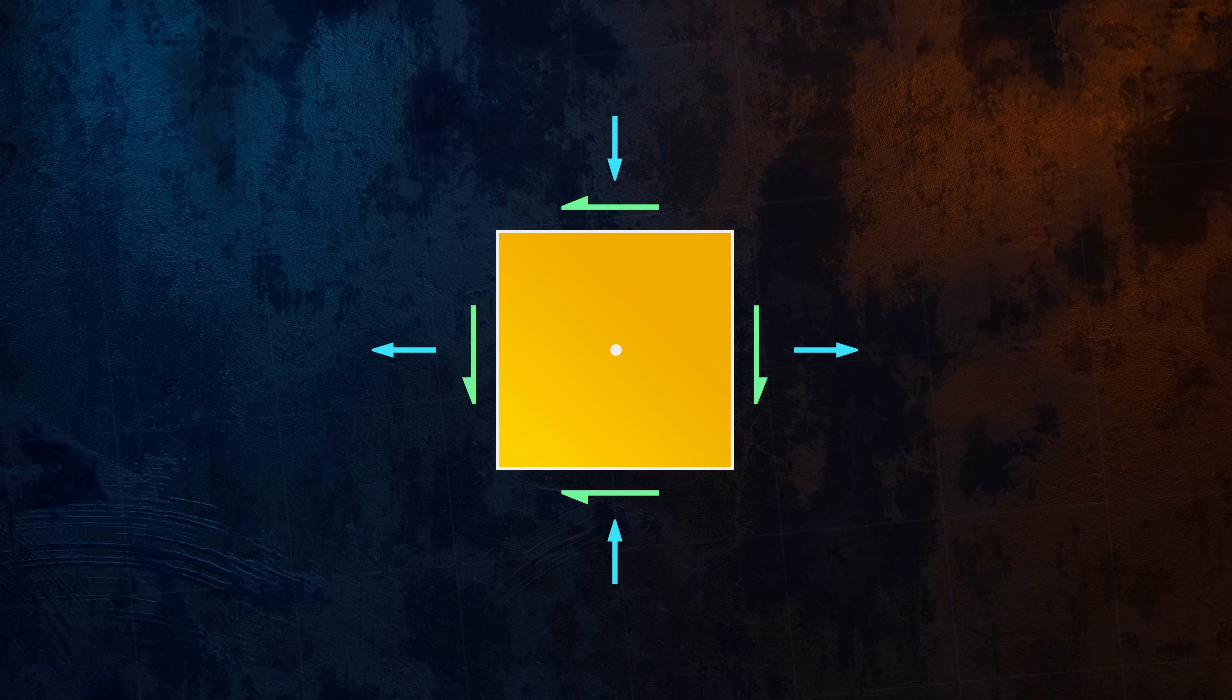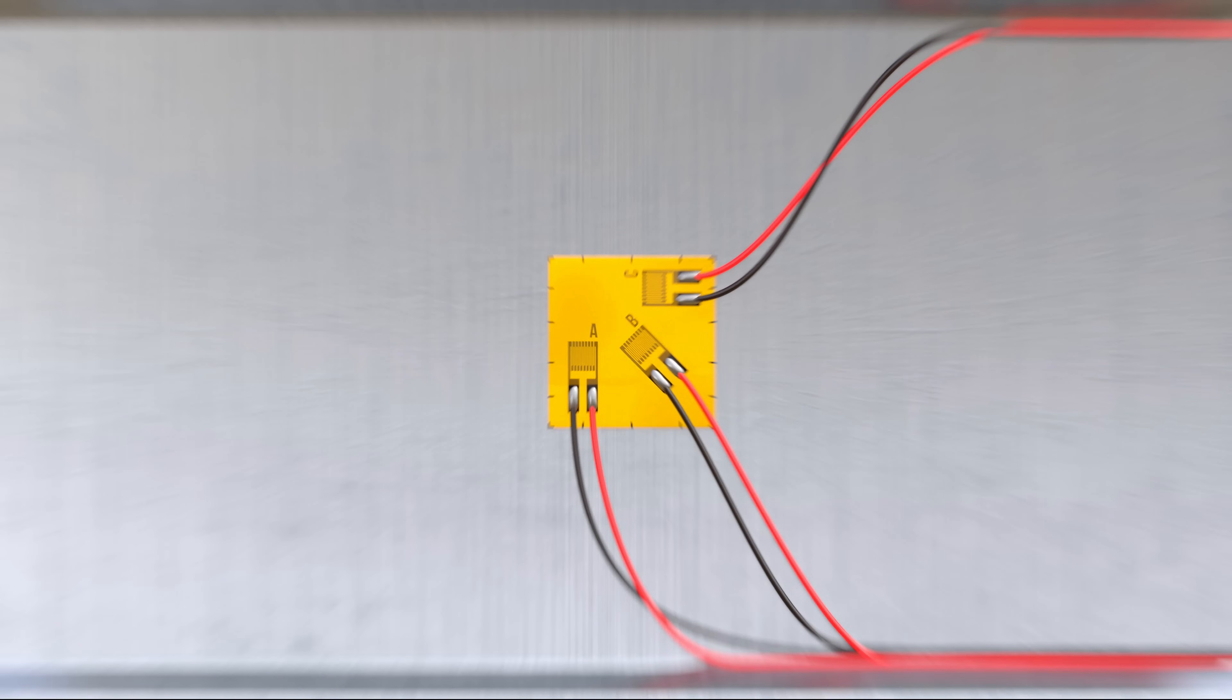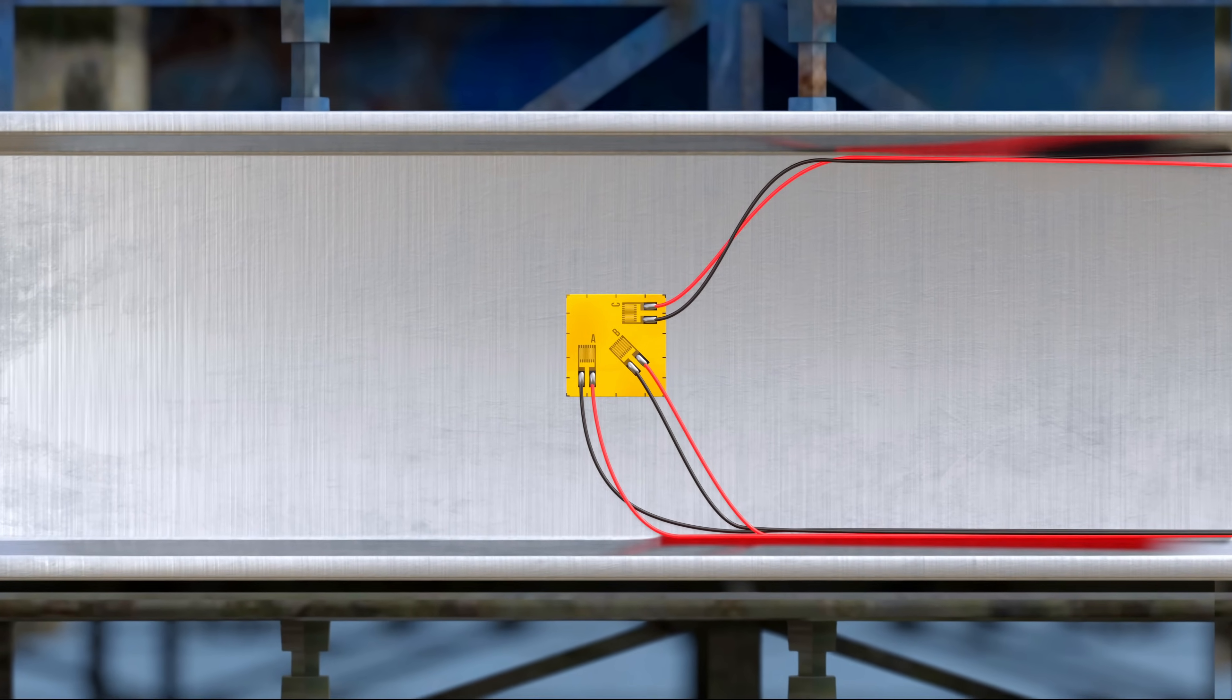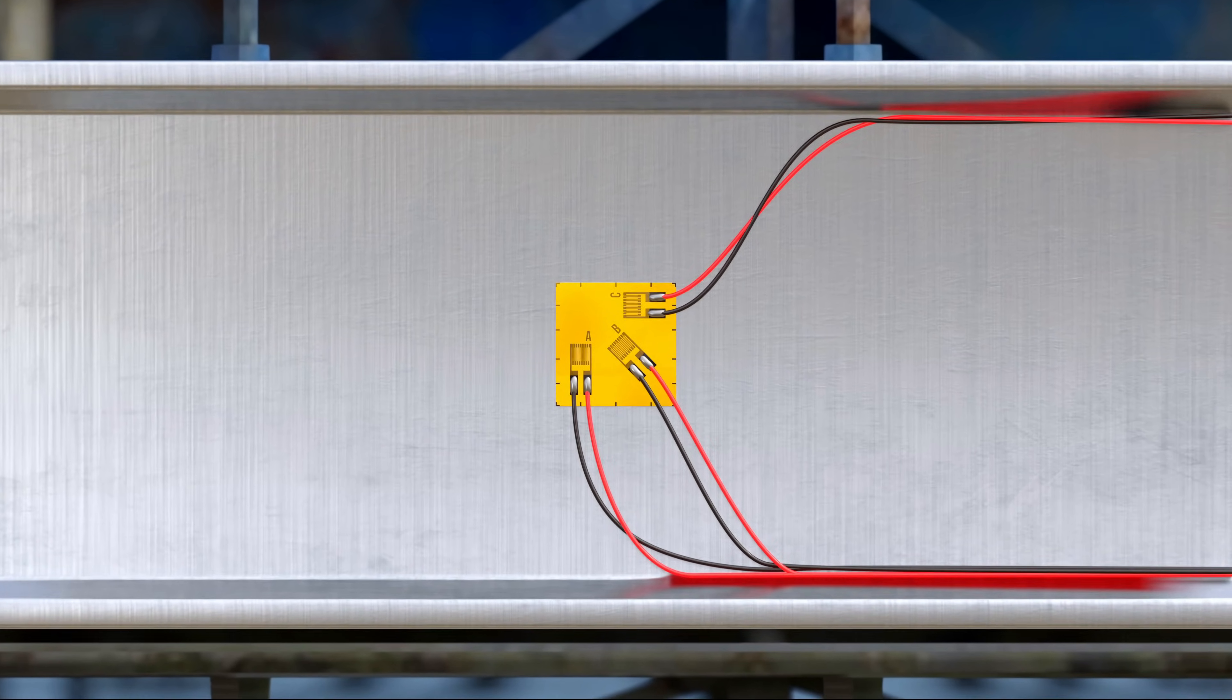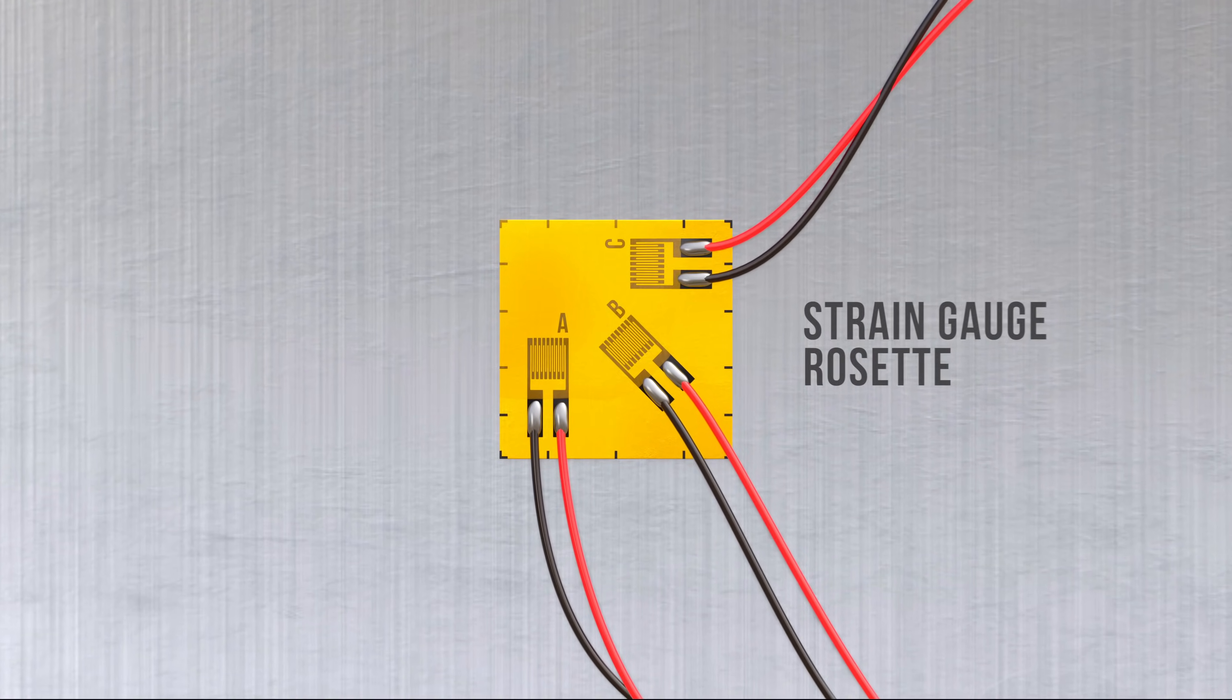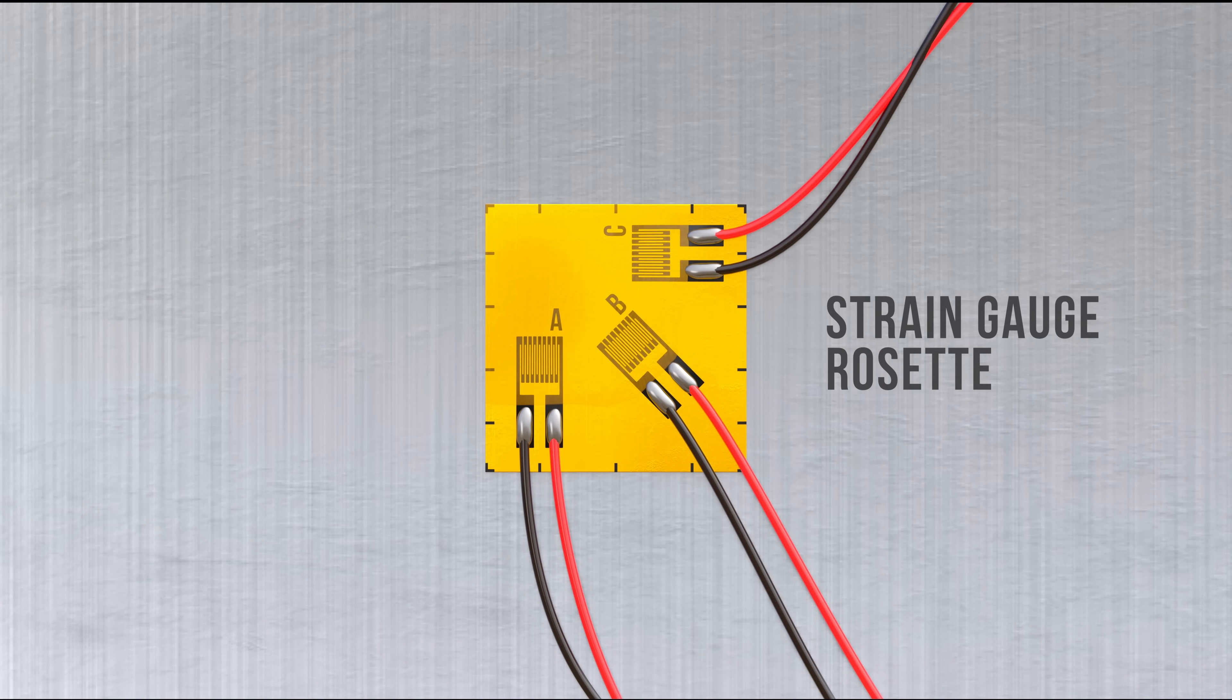For this reason, strain gauges are often used in sets of three, separated by angles of 45 or 60 degrees. This arrangement is called a strain gauge rosette. The rosette provides the normal strain at three different angles, which is enough information to fully define the strain state at a single point.